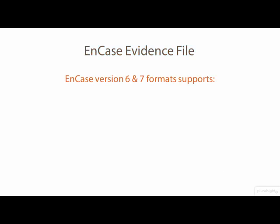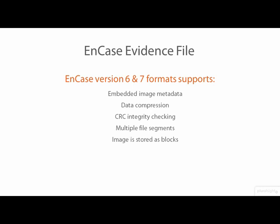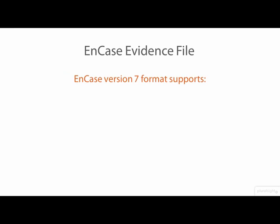EnCase version 6 and 7 formats support embedded metadata, image data compression, CRC integrity checking, and storing of a single forensic image as multiple physical files called segments. The digital image data is stored in blocks, each of which are assigned an Adler 32-bit CRC value for error checking, and the entire image is hashed using the MD5 cryptographic hashing algorithm for additional integrity verification. EnCase evidence file format version 2 for EnCase 7 adds AES-256 image data encryption, SHA-1 cryptographic hashing, and support for more image data compression algorithms, including run-length compression for blocks filled with identical byte values.